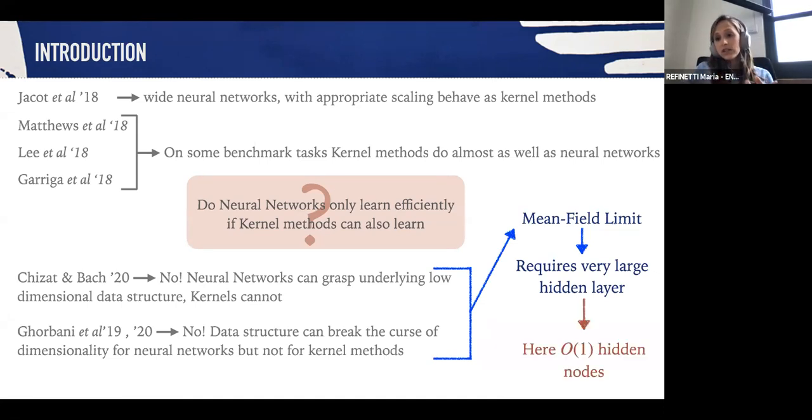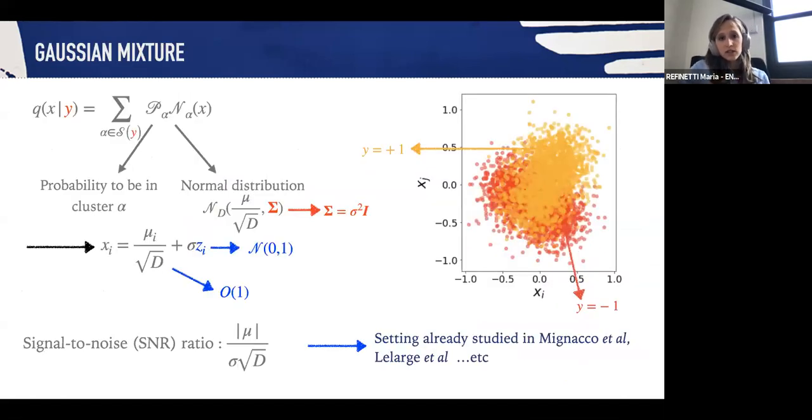We instead focused on the opposite limit in which the network has order one hidden nodes. In order to answer this question, the distribution we used was a Gaussian mixture distribution in which each sample comes from a cluster with probability p_alpha, and given the cluster it comes from, it's then distributed according to a normal distribution.